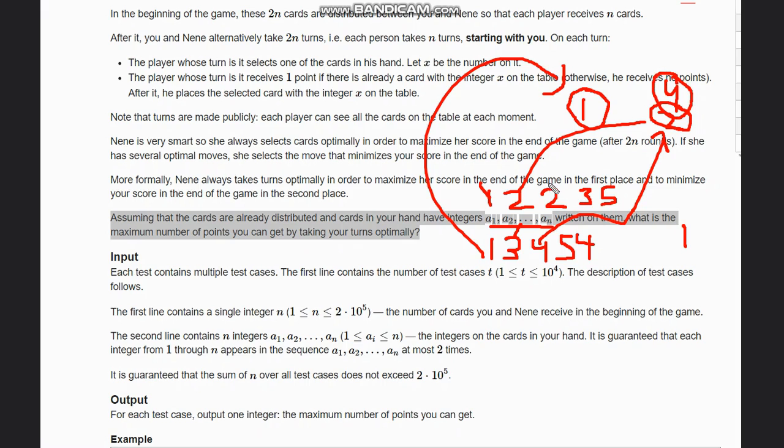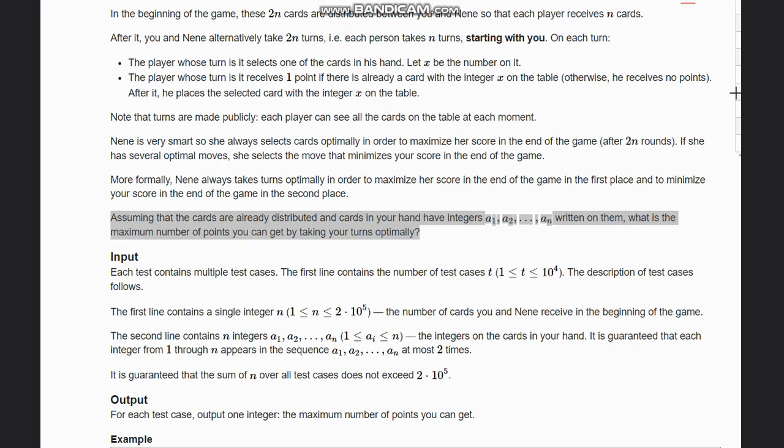Then after this, suppose she plays 3, so Neen can also play 3 there and Neen will have two points. Now suppose we play 2, so Neen does not have any card, again she plays 4. Then we play 5, Neen plays 5, and her count becomes three.